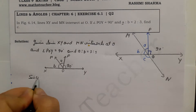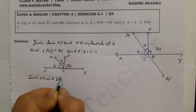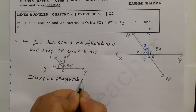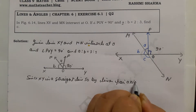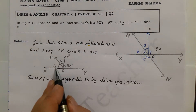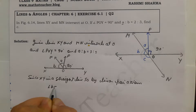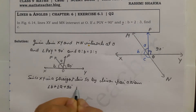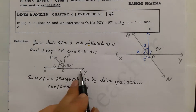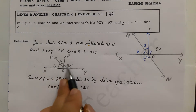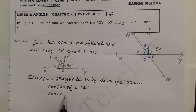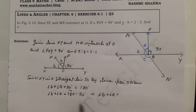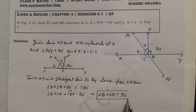Since XY is a straight line, by the linear pair axiom, angle b plus angle a plus 90 degrees equals 180 degrees. So angle b plus angle a equals 180 minus 90, which gives us angle a plus angle b equals 90 degrees. This is our Equation 1. The total of angle a and angle b is 90 degrees.